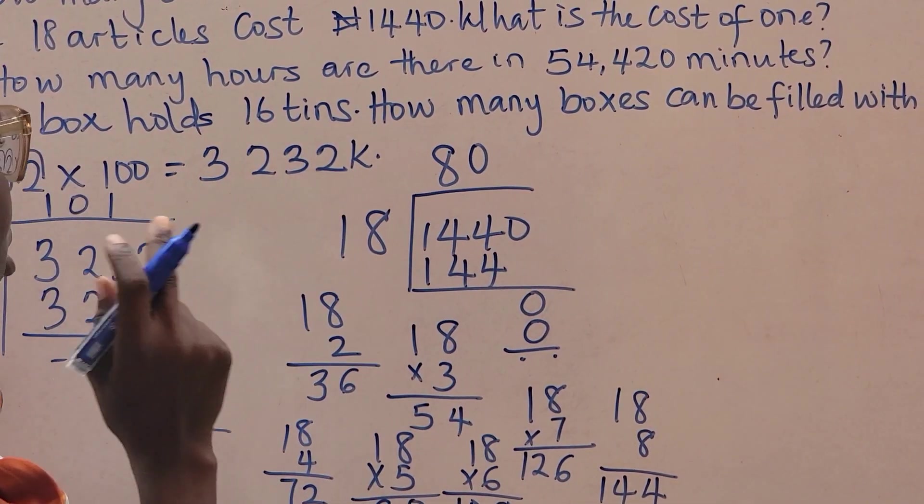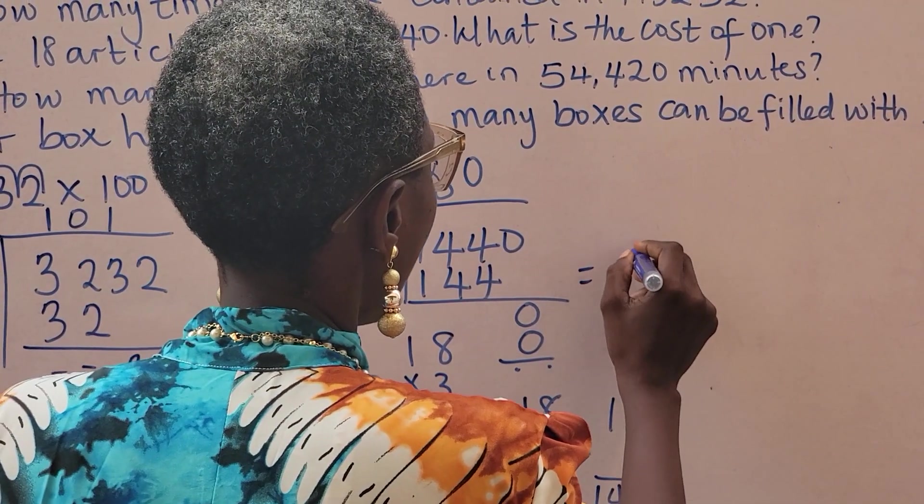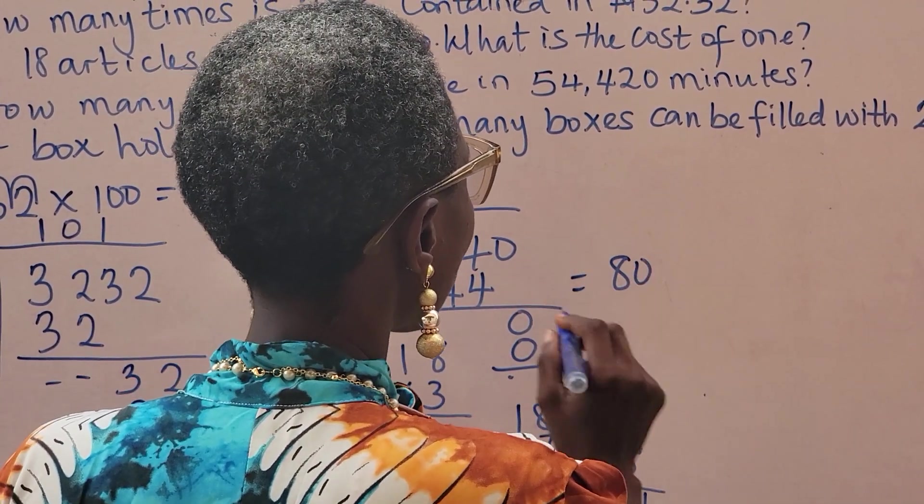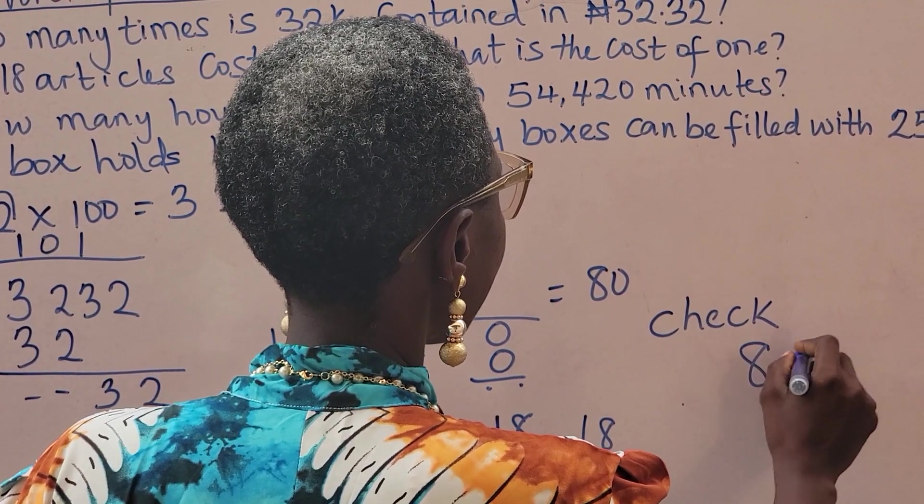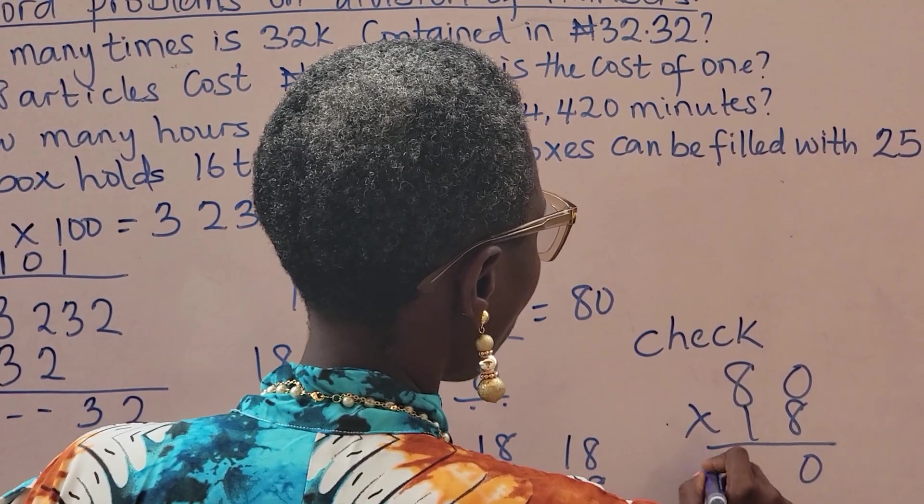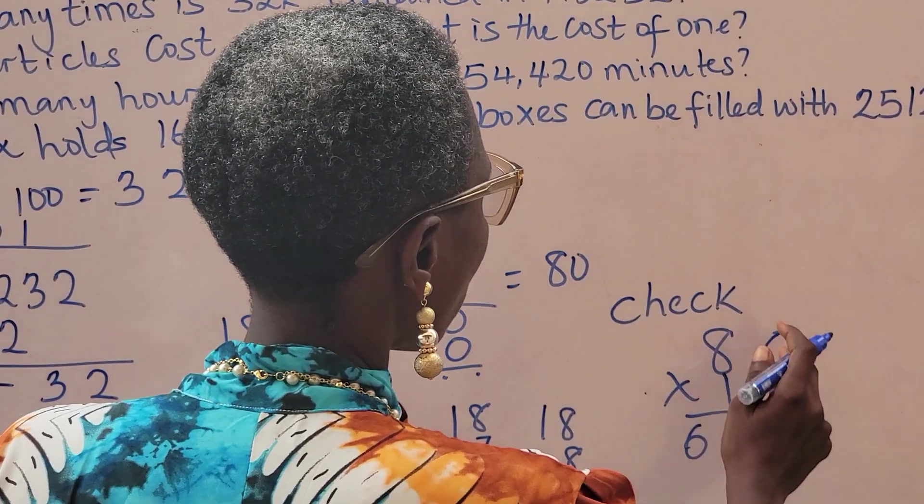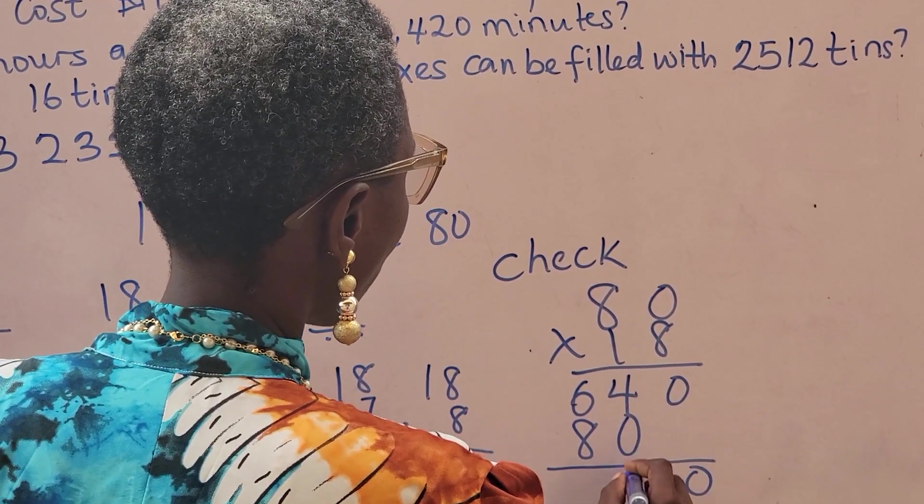That means the cost of one article is 80 naira. And if you decide to check like we've been doing, 80 times 18, our answer is 1440.